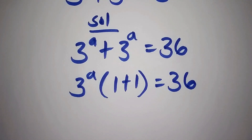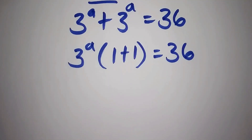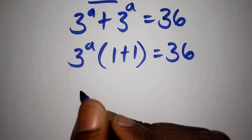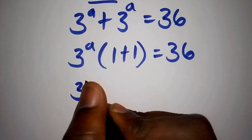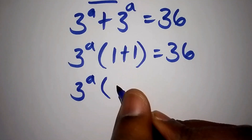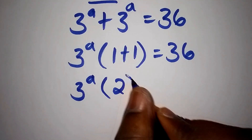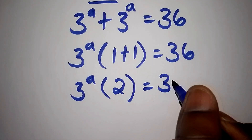The next step is to factorize 3 to the power of a plus 3 to the power of a. This can be written as 3 to the power of a, into bracket 1 plus 1, is equals to 36. We work out the number inside the bracket: 1 plus 1 equals 2, so 3 to the power of a times 2 equals 36.